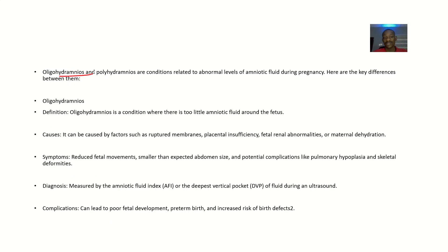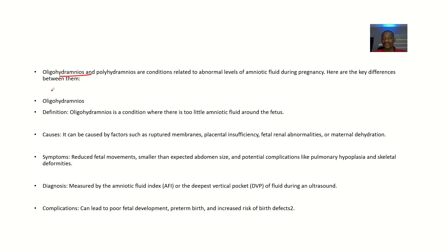Oligohydramnios and polyhydramnios are conditions related to abnormal levels of amniotic fluid — the amniotic fluid is not within the normal range that it should be. For the major differences, starting with definition: oligohydramnios is where there is little amniotic fluid around the fetus.